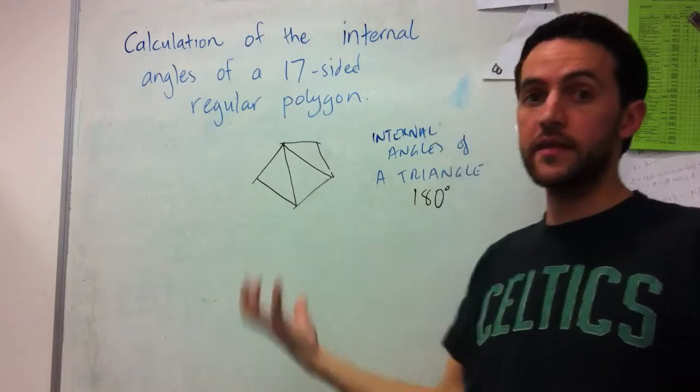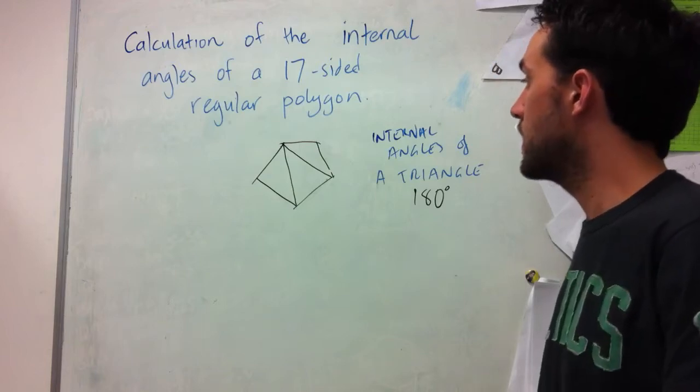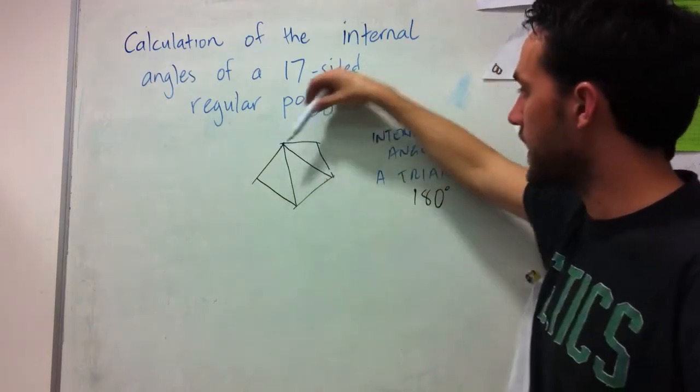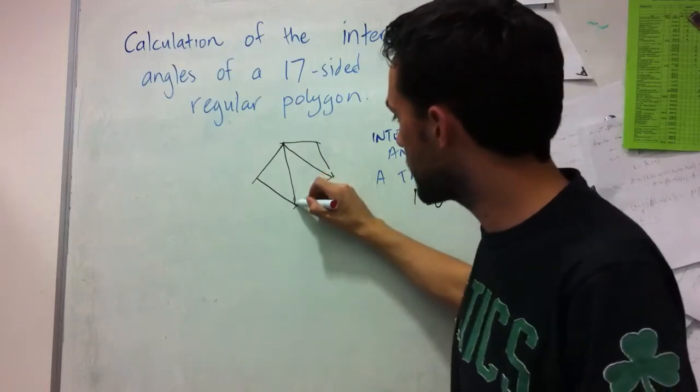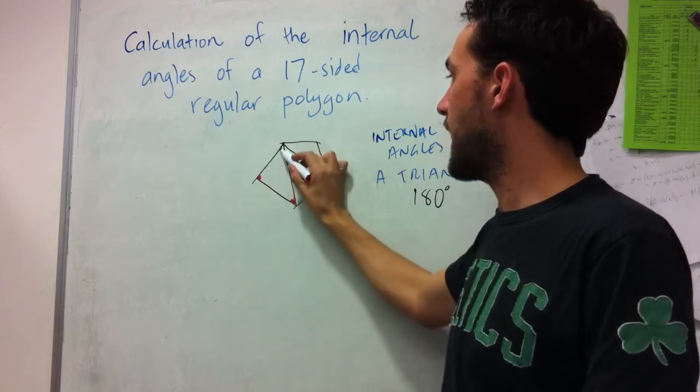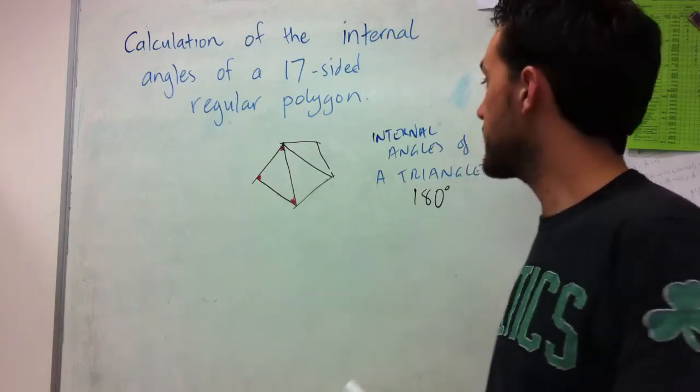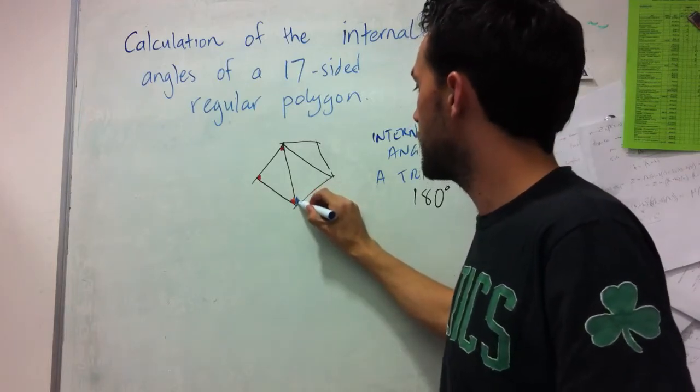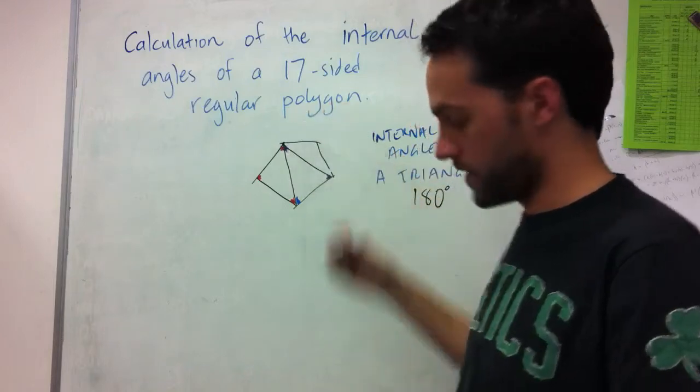I can use this to determine the total internal angles of any regular polygon. We can see here each of these triangles must be 180 degrees. I just need to make sure that the way of drawing the triangles means that the angles of those three triangles span completely or cover completely the five angles of the pentagon.